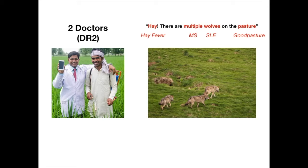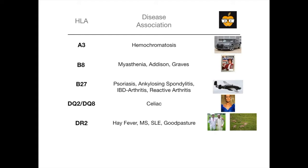Interesting little tidbit: lupus has to do with the word wolf because back in the day people used to think that the facial appearance of lupus looked like a wolf. A little bit of history. But that's HLA-DR2 — two doctors saying 'Hey, there are multiple wolves on the pasture.' That's an amazing mnemonic. I dare you to find a better mnemonic for HLA-DR2 than that dirty USMLE mnemonic right there.